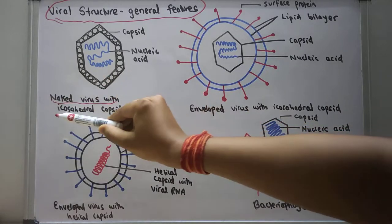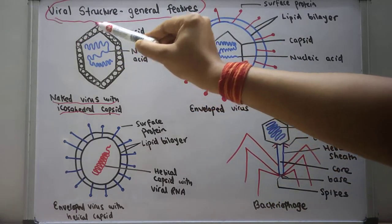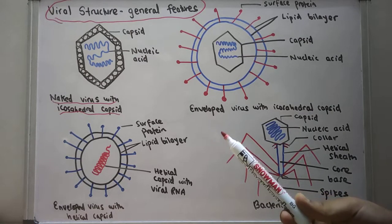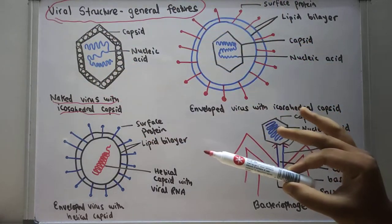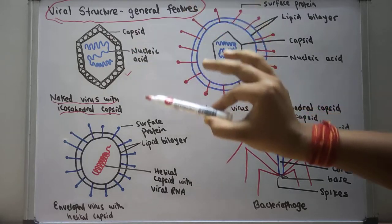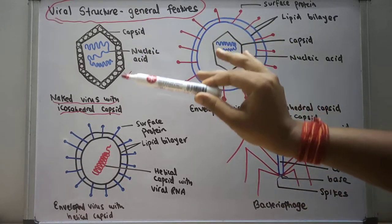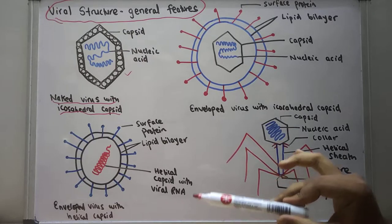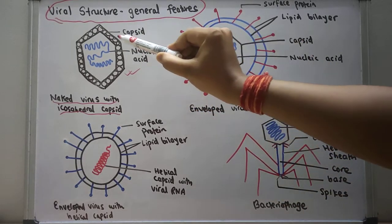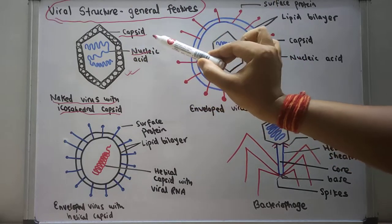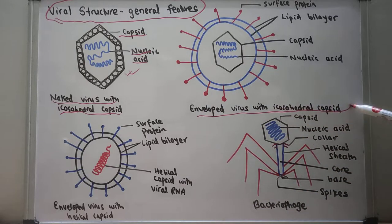First let us talk about the naked virus with icosahedral capsid. You can see the structure of this virus is icosahedral, so it is known as the icosahedral virus. There is no surrounding structure outside this capsid, so it is the naked virus. If the virus doesn't have any lipid bilayer outside this icosahedral capsid, then it is called a naked virus. You can see the capsid here, and there is also the nucleic acid inside the virus.